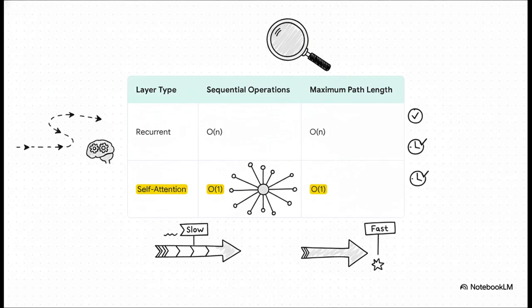Let's just look at the proof. Straight from table one in the paper. The key thing here is the maximum path length. Basically, how many steps does it take for information to get from one word to another? For the old RNNs, it grows with the sentence length. But for self-attention, it's O of one. A constant. It takes the exact same single step to connect the very first word to the very last word as it does to connect two words right next to each other. That is a monumental leap in efficiency. A total game changer.